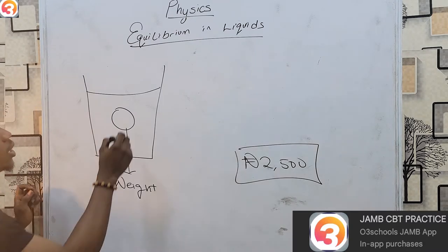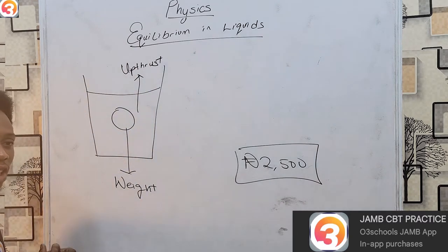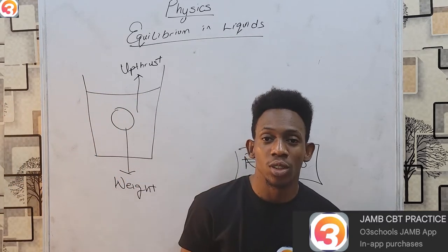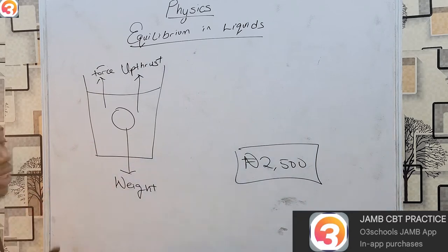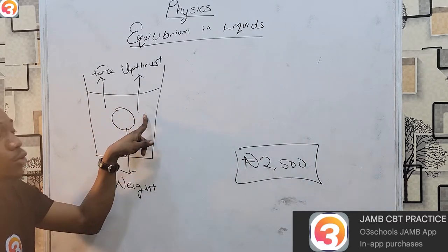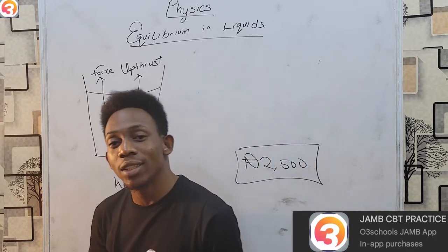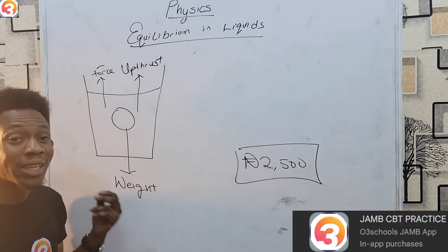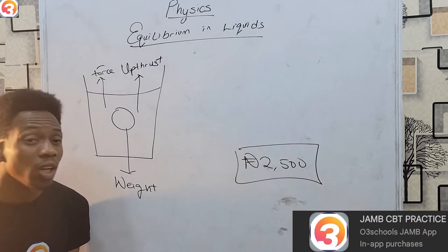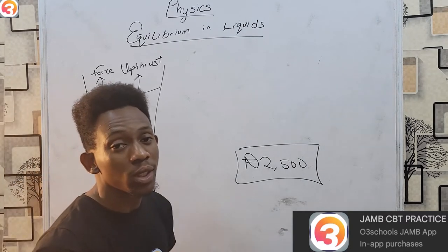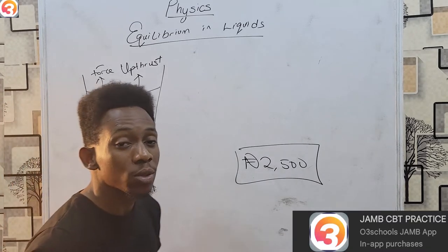The reason for that apparent increase is something we know as upthrust. Once an object is within a liquid, it experiences an upward force known as upthrust. This upthrust adds to your own force, making it easier to raise the object. The factors that affect upthrust are: number one, the density of the liquid — the more dense the liquid, the more the upthrust; and number two, the volume of the object submerged within the liquid. Something bigger expresses a bigger upthrust than something of smaller volume.